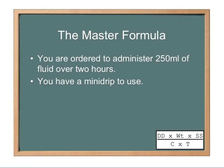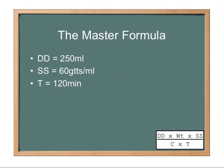Now you're ordered to administer 250 milliliters of fluid over two hours, and you have a mini drip to use. This is an interesting desired dose because it's just a fluid bolus. You're not giving any milligrams or micrograms. So in this dose, you're not really going to need a concentration. But since it's 250 milliliters over two hours, we will need time. So we put that two hours in the time component, but you've got to put it in the form of minutes.